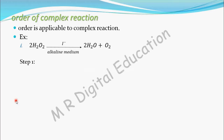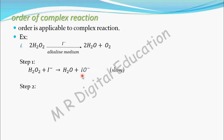In step one, one molecule of H₂O₂ combines with one molecule of I⁻ to give one molecule of H₂O and one molecule of an intermediate compound. This intermediate is formed in step one. In step two, one molecule of this intermediate compound combines with one more molecule of H₂O₂ to give H₂O, I⁻, and O₂.